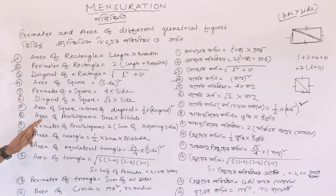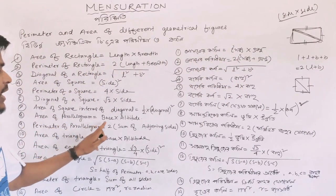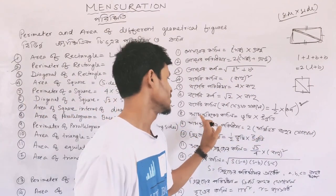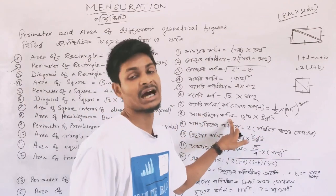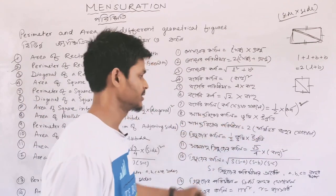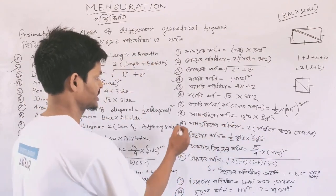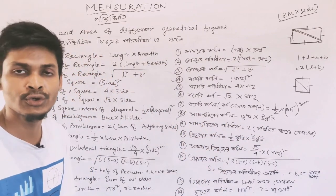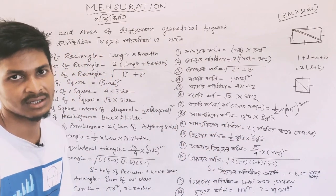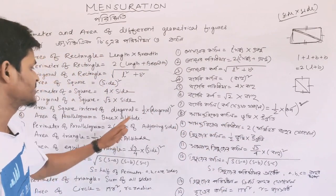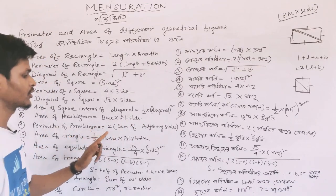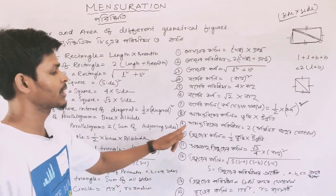Next, area of parallelogram. The formula is base into altitude. So the area of a parallelogram equals base × altitude (height).